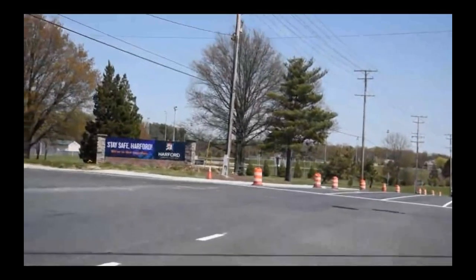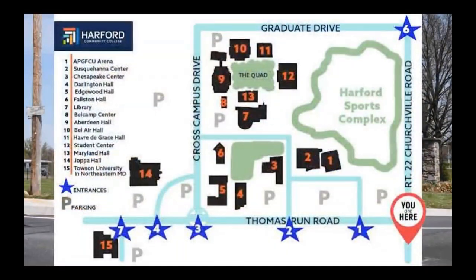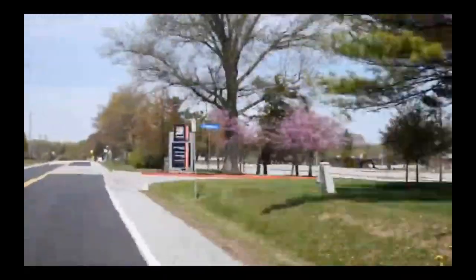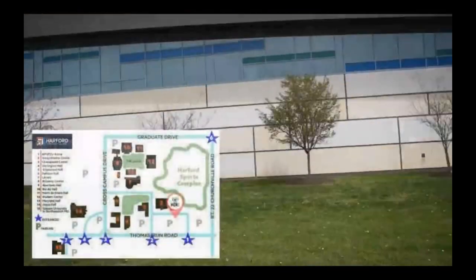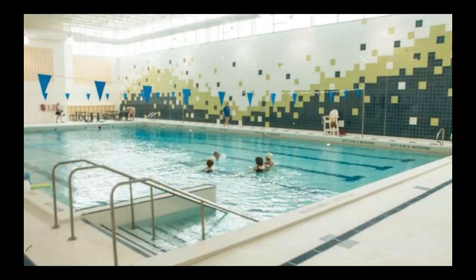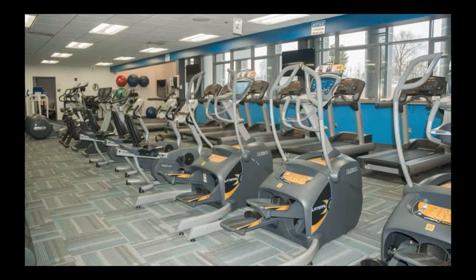Hi everybody, my name is Kevin. I'm a Harford Community College graduate and part-time employee, and I'll give you a quick tour of the campus. Classes can be found around campus, everything is within walking distance, and parking is always available. Starting at the intersection of Route 22 and Thomas Run Road, there are seven entrances to campus — one off Route 22 near the wall, and six off Thomas Run Road. After passing the athletic fields through entrance one, you come to the APG Federal Credit Union Arena, home to the Fighting Owls basketball and volleyball teams, and host to concerts, events, and competitions throughout the year.